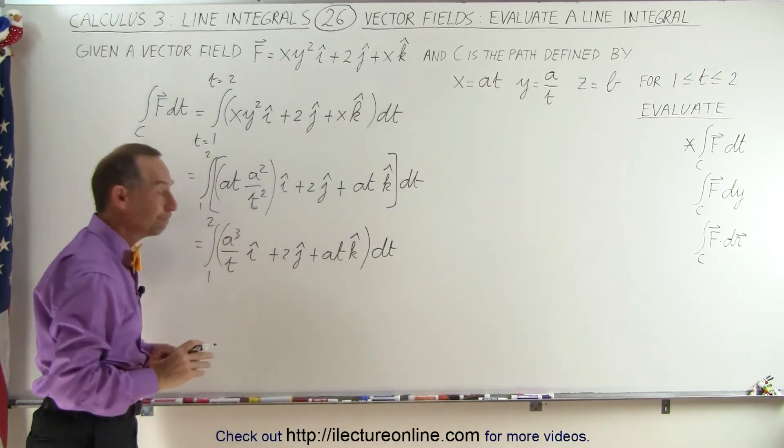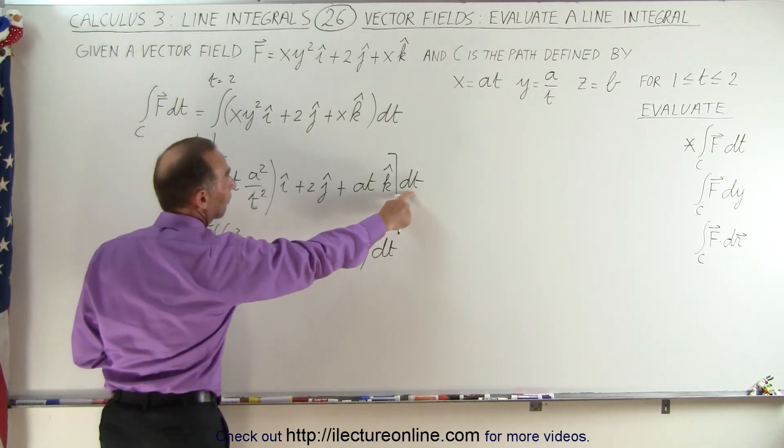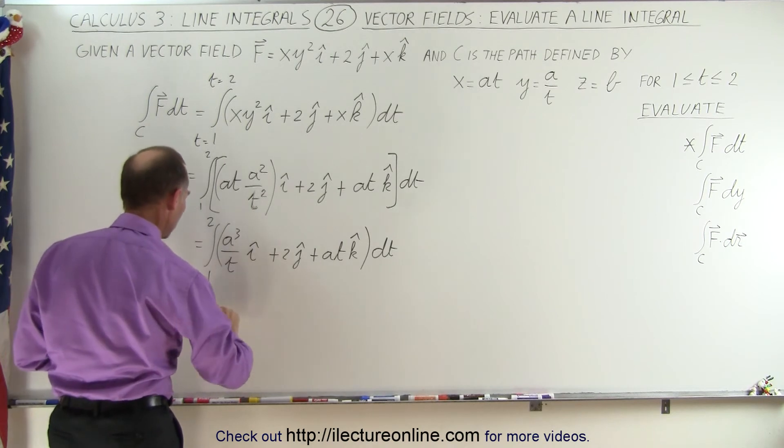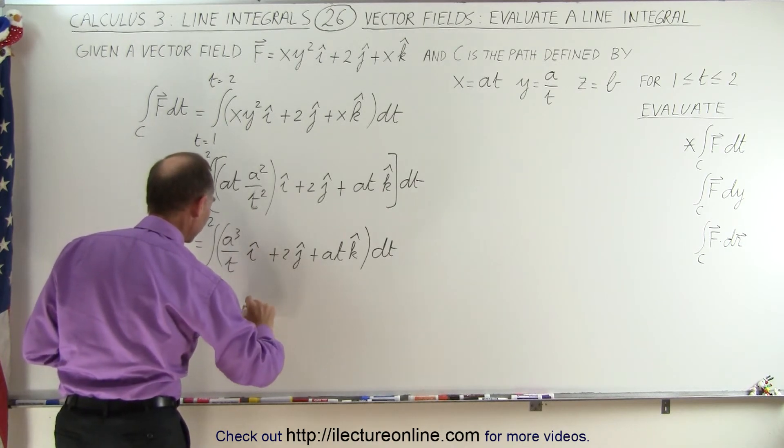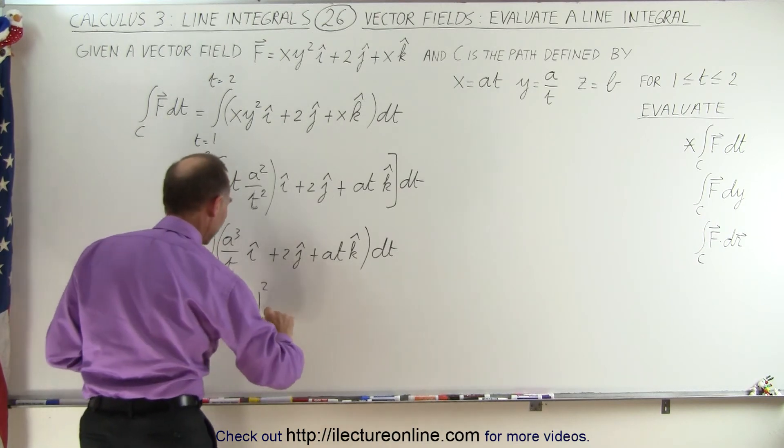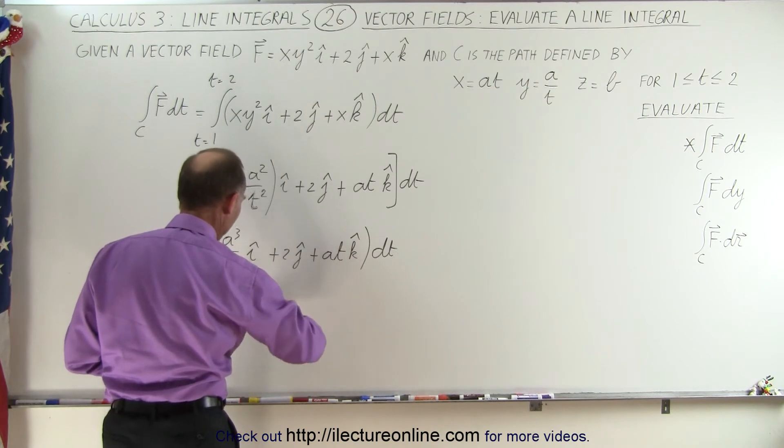And now we're ready to integrate. Now notice we still have our unit vectors in here, because we didn't have a vector here, we didn't have a dot product. So this becomes equal to a³ times the natural log of t, evaluated from 1 to 2 in the i direction, and maybe I'll just leave this to the very end. I'll just write it at the very end.